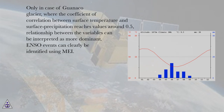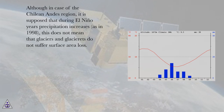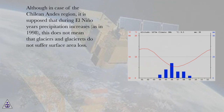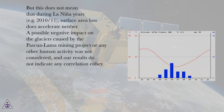ENSO events can clearly be identified. Although in the Chilean Andes region it is supposed that during El Niño years precipitation increases — as in 1998 — this does not mean that glaciers and glacier rays do not suffer surface area loss. But this also does not mean that during La Niña years, for example 2010–11, surface area loss accelerates either.